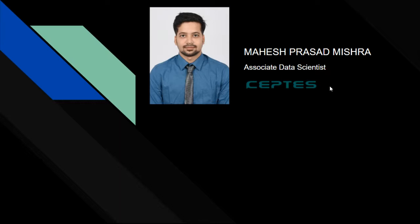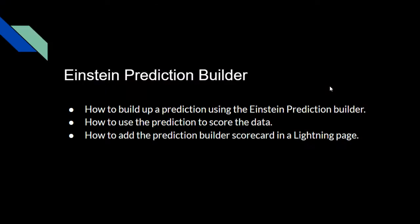Today we are going to learn about the Einstein Prediction Builder. The Einstein Prediction Builder is a very useful component in Salesforce — it helps us build up a prediction by supporting the data we need. There are two types of predictions: classification type prediction and regression type prediction.